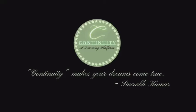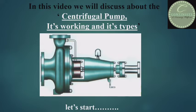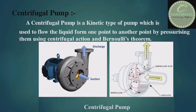Welcome to the Continuity channel. Today I will discuss the centrifugal pump, its working, and its types. A centrifugal pump is a kinetic type of pump which is used to flow liquid from one point to another point by pressurizing it using centrifugal action and Bernoulli's theorem. Look at the picture — this is a centrifugal pump. Fluid enters from the suction side and exits from the discharge side.